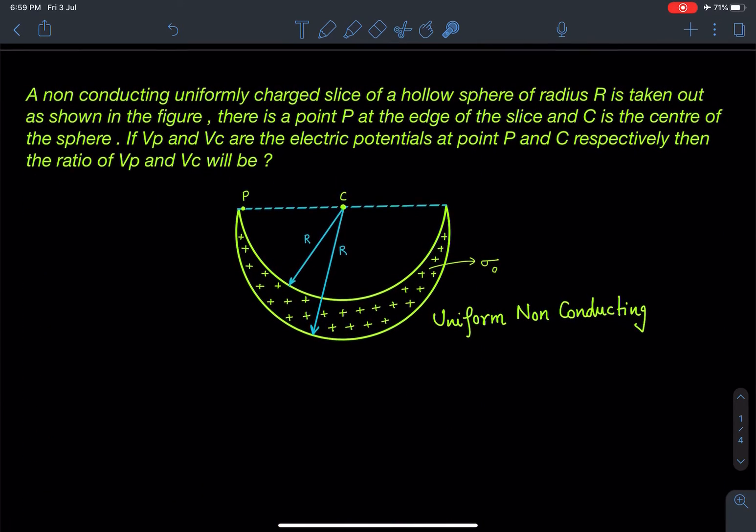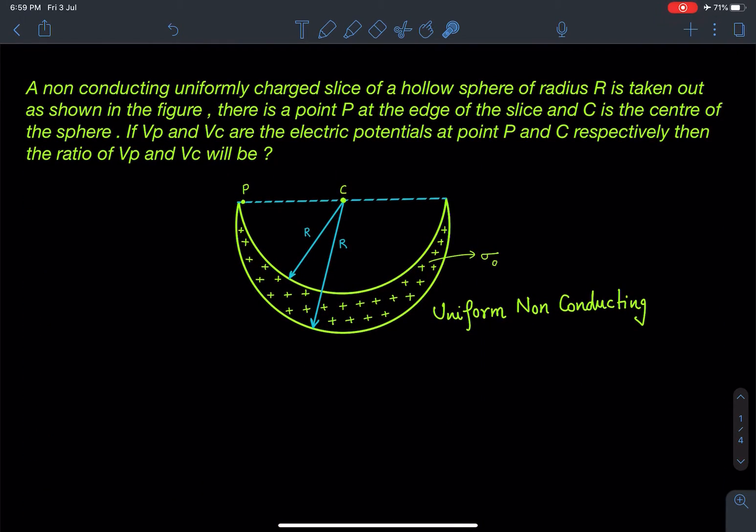Here is the statement of this problem: A non-conducting uniformly charged slice of a hollow sphere of radius R is taken out as shown in the figure. There is a point P at the edge of the slice and C is the center of the sphere. If Vp and Vc are the electric potentials at point P and C respectively, then the ratio of Vp and Vc will be what?